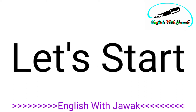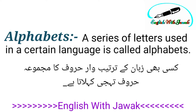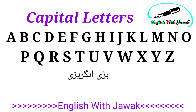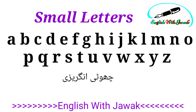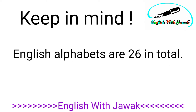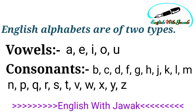تو دوستو، ہر زبان کی طرح انگلش کے بھی حروف تہجی ہوتے ہیں جن کو ہم الفیبیٹس یا لیٹرز کہتے ہیں۔ یہ الفیبیٹس دو طرح کے ہوتے ہیں: ایک کو ہم capital لیٹرز کہتے ہیں جسے عام زبان میں بڑی انگریزی بھی بولا جاتا ہے، اور دوسرے کو small لیٹرز کہتے ہیں جسے چھوٹی انگریزی بھی کہتے ہیں۔ انگلش کے الفیبیٹس یعنی لیٹرز 26 ہیں۔ ان 26 الفیبیٹس کو ہم pronunciation کی بنیاد پر دو قسموں میں divide کرتے ہیں۔